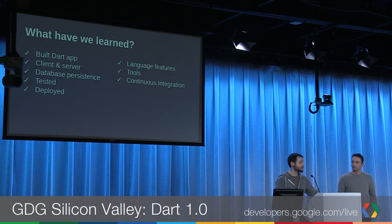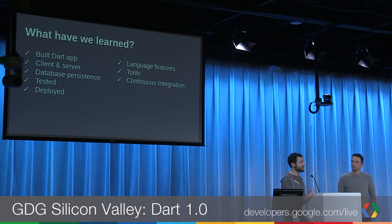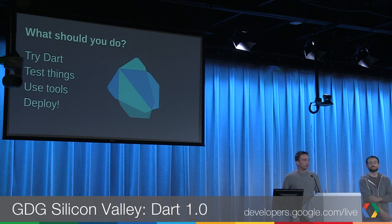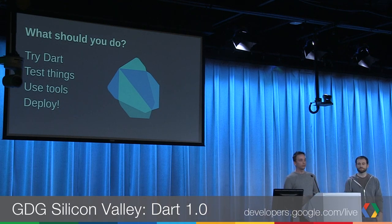To recap: we built an entire Dart application — client and server — with the same code used on both. We persisted something to a database, so we went round trip. We tested things with various testing tools, whether through HTML or the command line. We actually deployed it and it's live out in the world. We touched on a few language features of Dart and some additional tools to help with the workflow, wrapping up with continuous integration showing how it could ease your workflow as a developer. In conclusion: Dart is awesome, Dart has an awesome ecosystem, and it's still a young language. Try Dart, test things, use tools, and deploy.